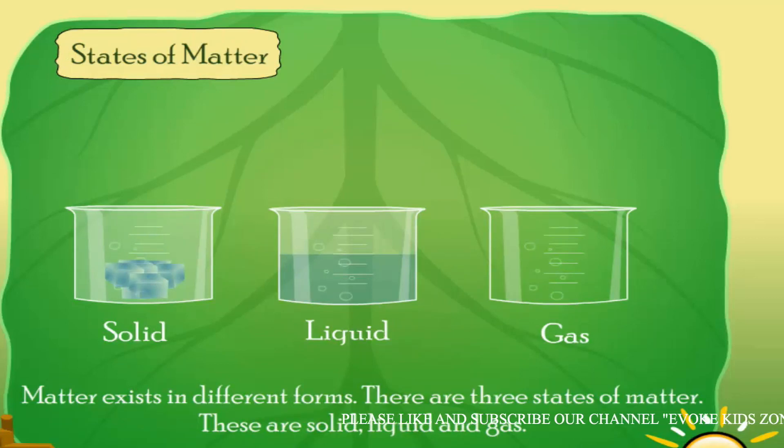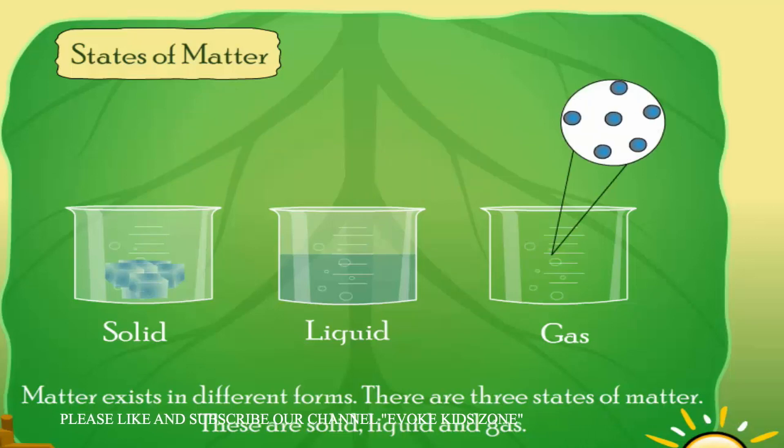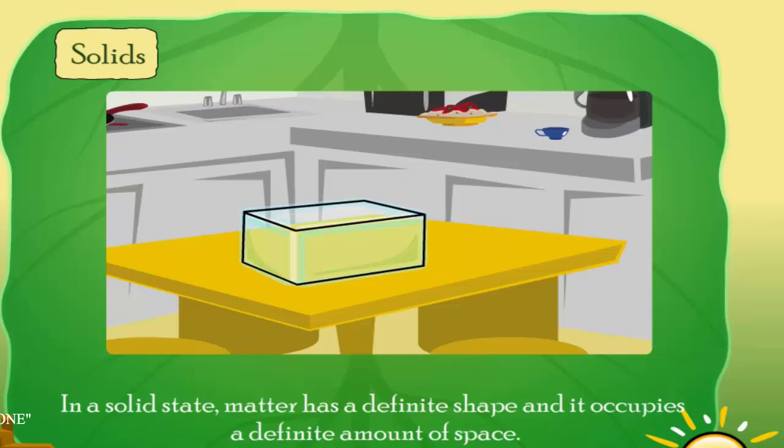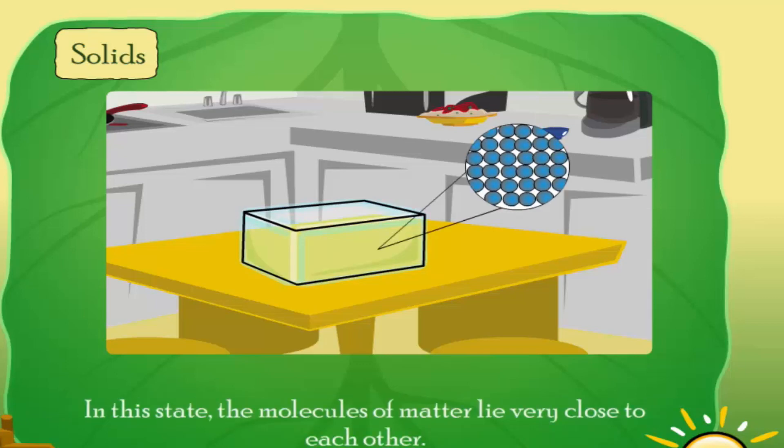In a solid state, matter has a definite shape and it occupies a definite amount of space. In this state, the molecules of matter lie very close to each other. A spoon, a book, and the blackboard are some examples of solids.